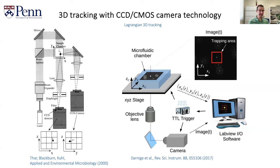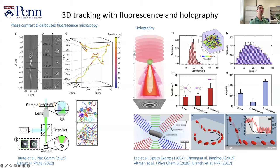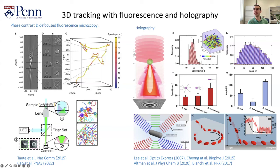Besides Lagrangian 3D tracking, there are also other methods developed recently. You can use phase contrast microscopy — the idea is very clean. You use a phase contrast objective on your microscope. When your bacterium is in focus, you see a nice focused point. But when the cell goes out of focus, you see rings. From the size of these rings, you can calculate the Z position of your cell.